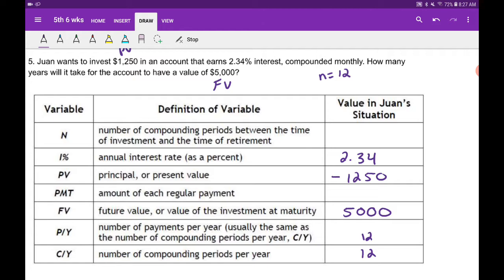If you forget to do that, what ends up happening is you'll get an error, or you'll get a negative whatever you're looking for. If I left it as a positive and I'm looking for the future value, the future value would come out as a negative $5,000 because you kind of did it backwards.